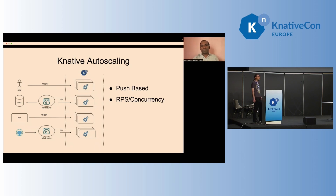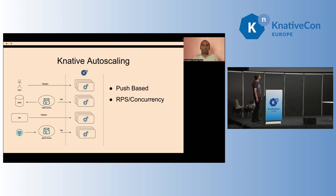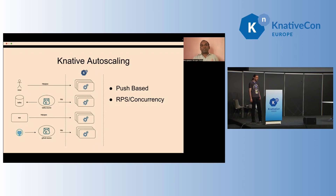The default metric is concurrency and the default value is 100. For example, if you create a Knative service without changing any defaults and send 150 requests to your application, you should have two pods of the application running. This can be changed based on your needs — either concurrency or requests per second. The requests could come from end users, from an application calling your APIs, or from Knative Eventing sourcing data from multiple event sources. Since this is pushing the request to the Knative service, we call this push-based autoscaling.